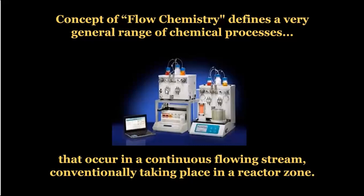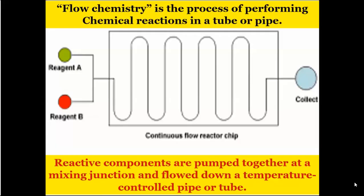The concept of flow chemistry defines a very general range of chemical processes. A batch-wise or continuous flow reaction that occurs in a continuously flowing stream, conventionally taking place in a reactor. Flow chemistry is the process of performing chemical reactions in a tube or a pipe. Reactive components are pumped together at a mixing junction and flowed down a temperature-controlled pipe.